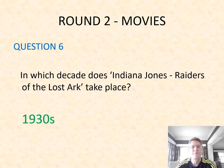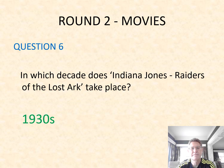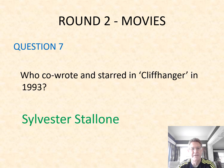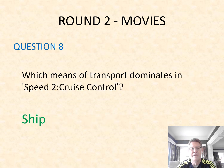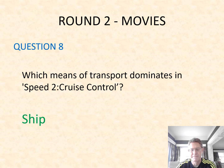Question six: in which decade does Indiana Jones Raiders of the Lost Ark take place? It's in the 1930s — the run-up to the Second World War. Question seven: who co-wrote and starred in Cliffhanger in 1993? That was Sylvester Stallone. And your final movies question, number eight: which means of transport dominates in Speed 2: Cruise Control? It is a ship.